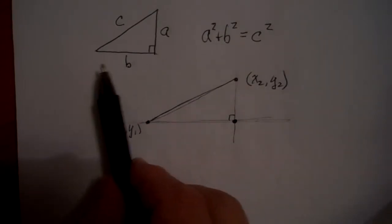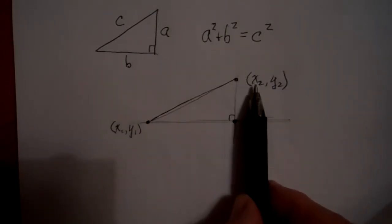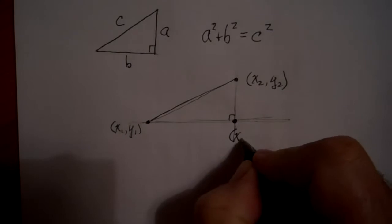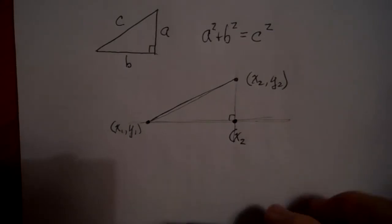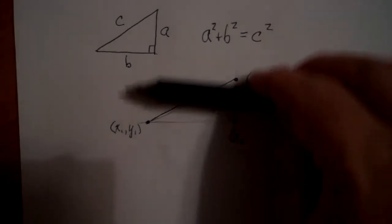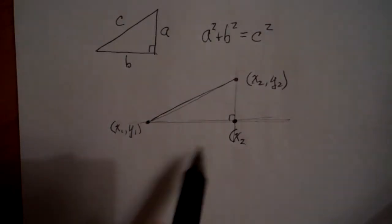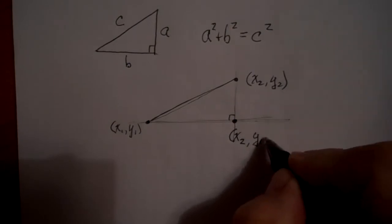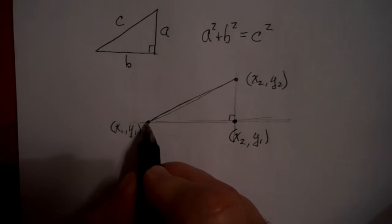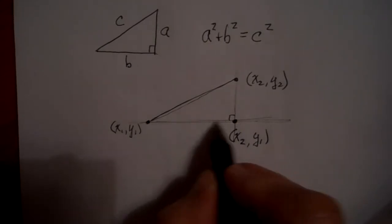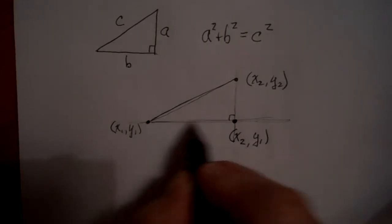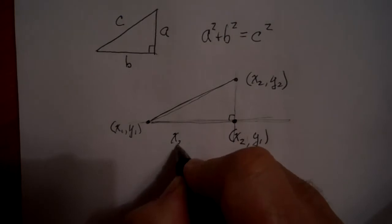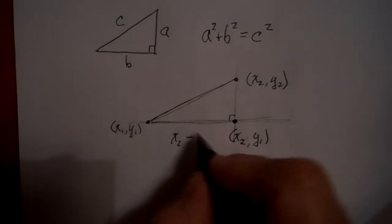Let's examine this intersection point. The x-value of that point is given by its left-right position, and it's going to have the same left-right position as (x₂, y₂), so its x-value is x₂. Its y-position is given by the up-down value and will match the other point, so it's y₁. That means we can find the length of the horizontal segment — it's going to be x₂ minus x₁.